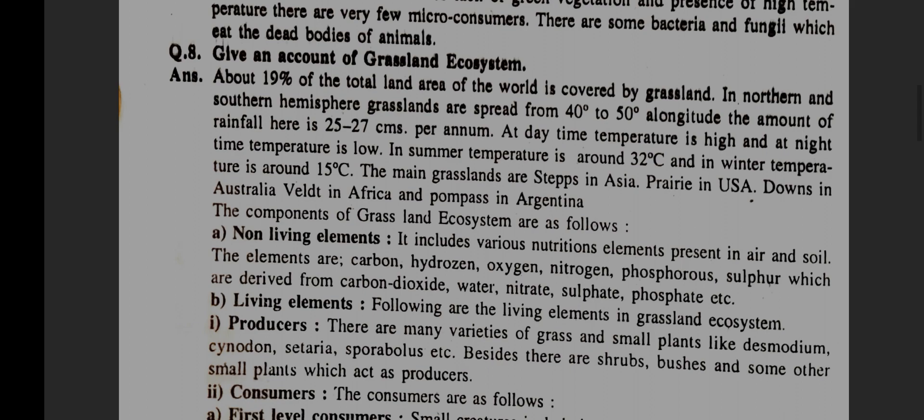Give an account of grassland ecosystem. About 19% of the total land area of the world is covered by grassland. In the northern and southern hemisphere, grasslands are spread from 40 degrees to 50 degrees longitude. The amount of rainfall here is 25–75 centimeters per annum. At daytime temperature is high and at nighttime temperature is low. In summer, temperature is around 32 degrees Celsius and in winter around 15 degrees Celsius.